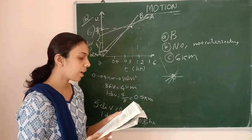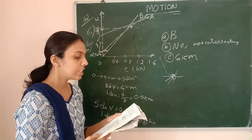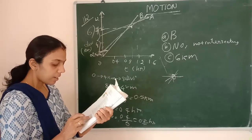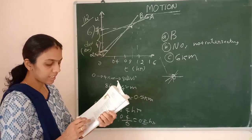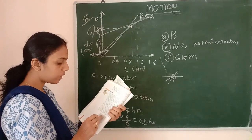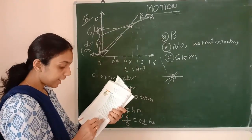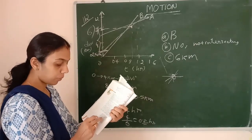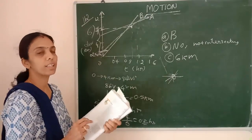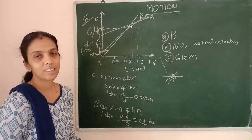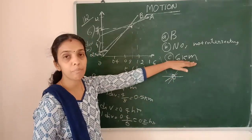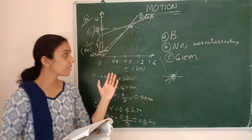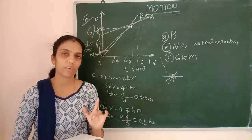For the next part — how far has B traveled at the time it passes A — find the time when C and A intersect, which is at 1.6 hours on the time axis. Then read off how far B has traveled at that same time. Apply the same method as before using the graph to find the corresponding distance value.